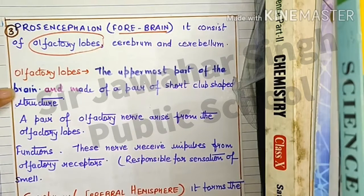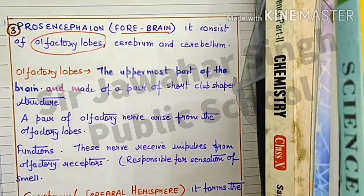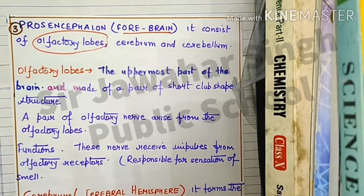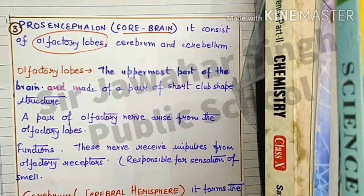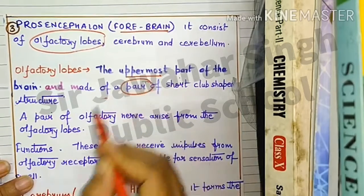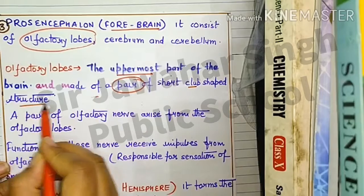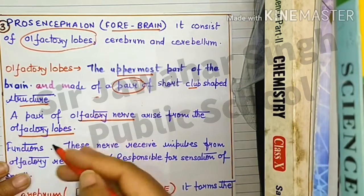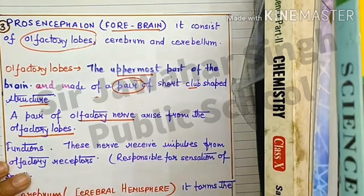The olfactory nerves receive impulses — that is, messages — from the olfactory receptors, which are cells in the nose responsible for the sensation of smell. The olfactory lobes are the uppermost part of the brain and are made up of a pair of short, club-shaped structures. A pair of olfactory nerves arise from the olfactory lobes, acting as receptors for smell sensation.